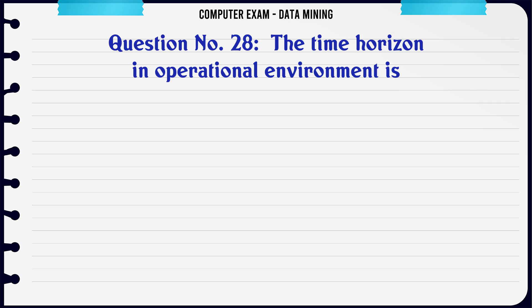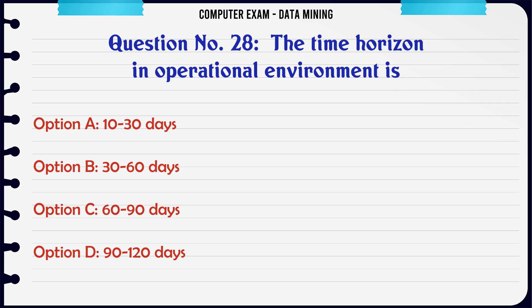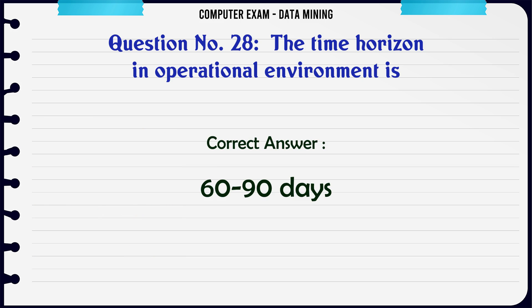The time horizon in operational environment is: A. 10-30 days. B. 30-60 days. C. 60-90 days. D. 90-120 days. The correct answer is 60-90 days.